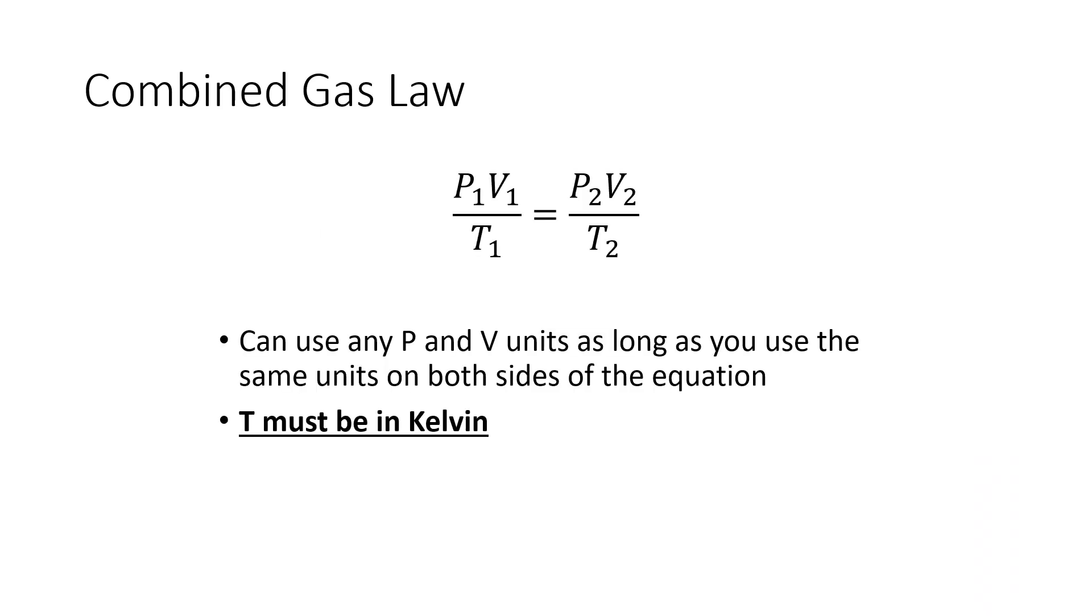The first of these two equations is known as the combined gas law. With the combined gas law, our equation says P1V1 over T1 equals P2V2 over T2. So P is pressure, V is volume, T is temperature. The subscripts of one refer to our initial conditions and the subscripts of two refer to our final conditions.